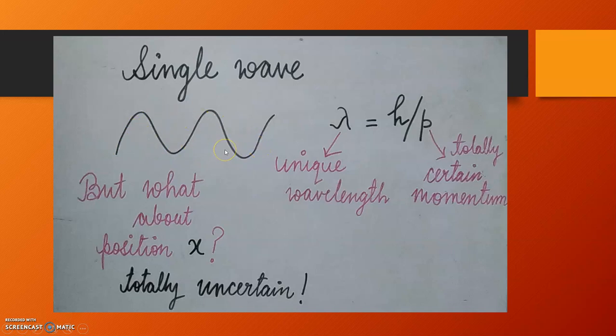For such a wave, as per de Broglie, we know that its wavelength would be given by h by p. Now since this single wave has a unique wavelength, which means a single wavelength, this momentum is uniquely determined or the value of this momentum is totally certain.